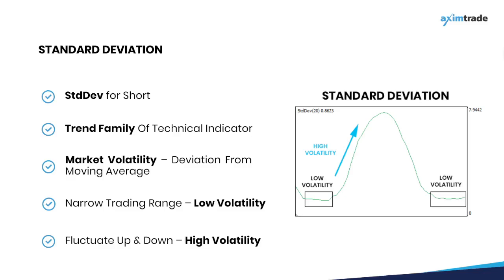There is a tendency for the standard deviation indicator to appear low when prices are trading within a narrow trading range, which indicates that the prices are in a low volatility environment. Conversely, if price fluctuates sharply up and down, the standard deviation returns a high value, indicating a high level of volatility in the market.